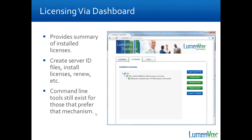One of the nice features is we've tried to make licensing really friendly. Everything you could do through the old Windows GUI dashboard for licensing you can do through the new web dashboard, as well as anything available through the command line licensing utilities. You can view installed licenses, create your server ID info.bts file, install licenses, uninstall licenses, renew licenses, and there's a button that takes you right to the lumenvox.com licensing web portal. Command line tools are still in place for Linux users who prefer them.